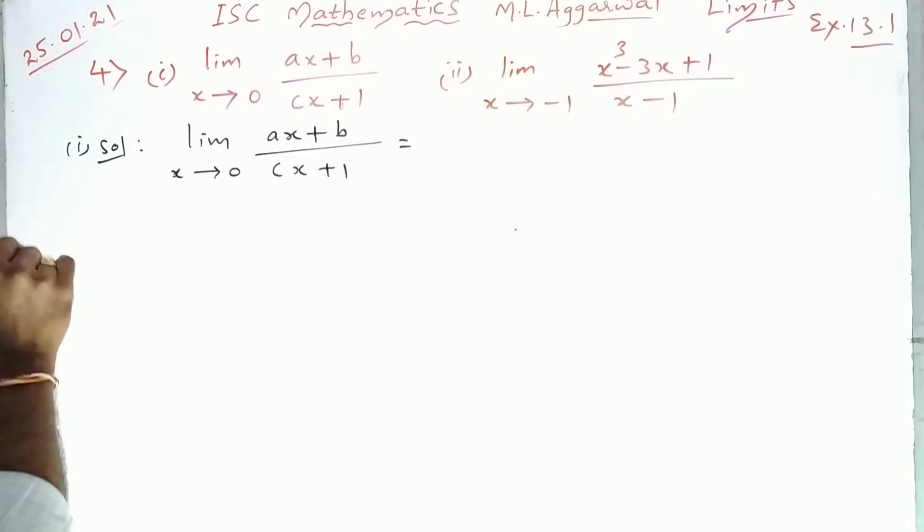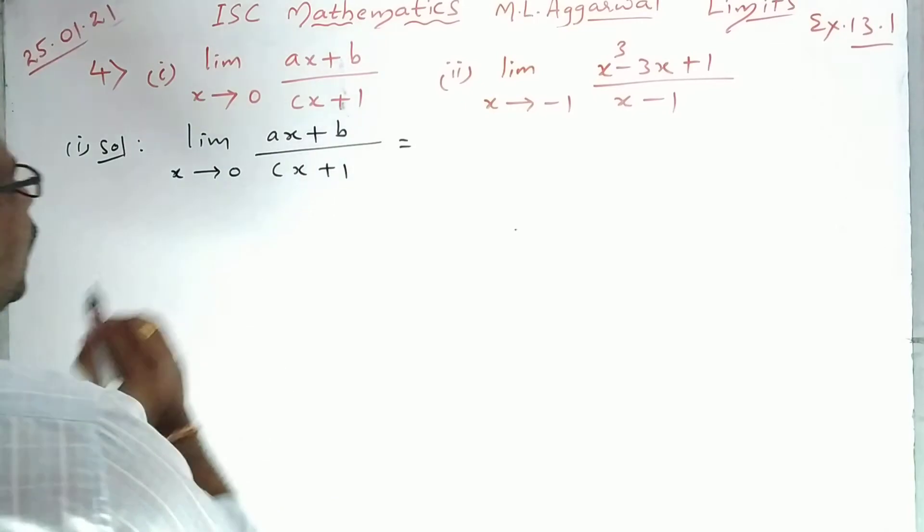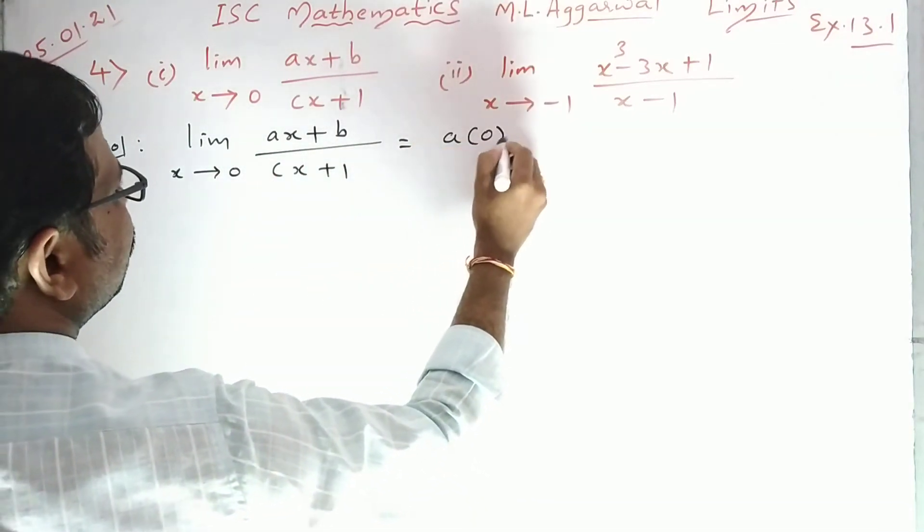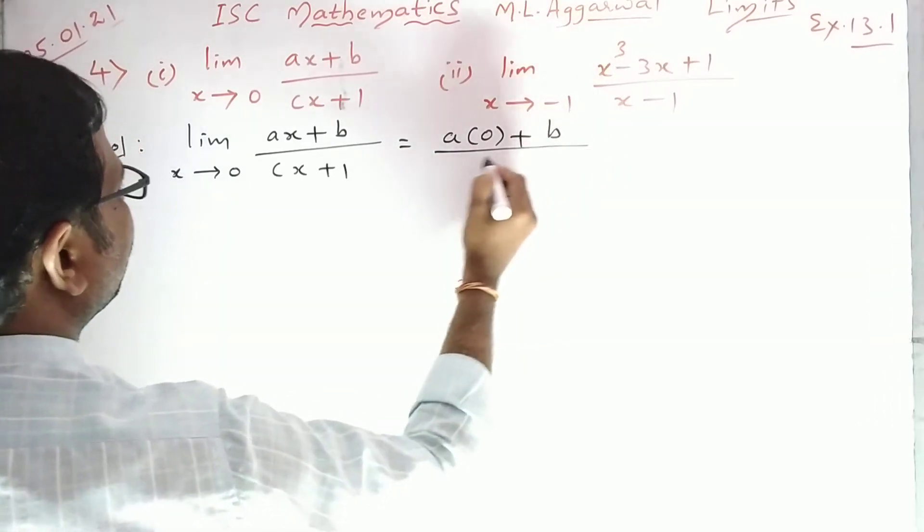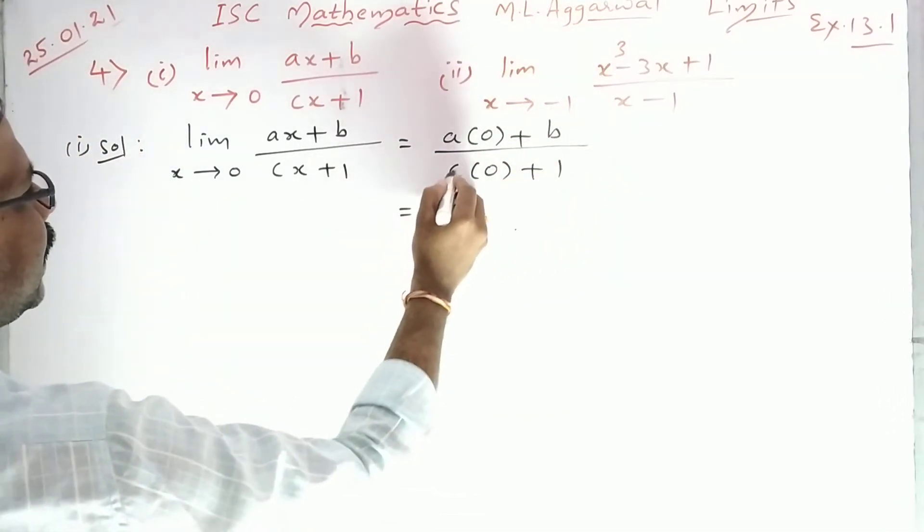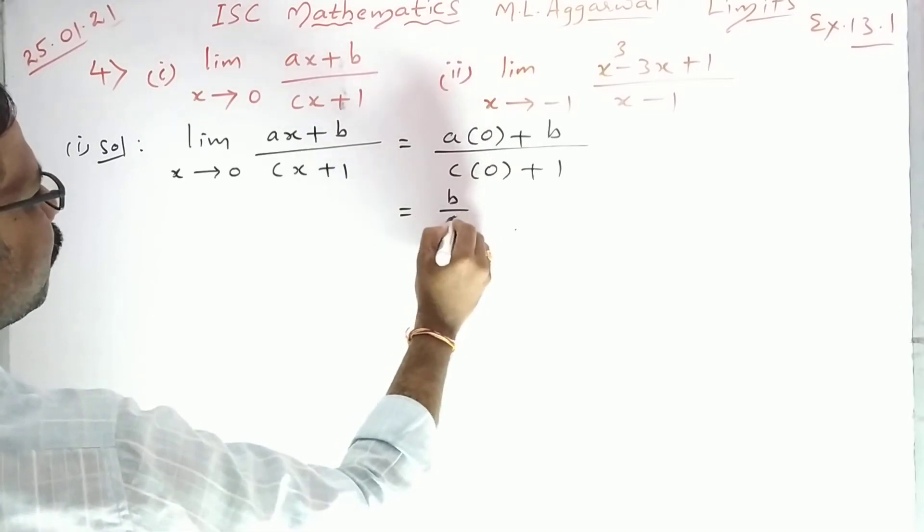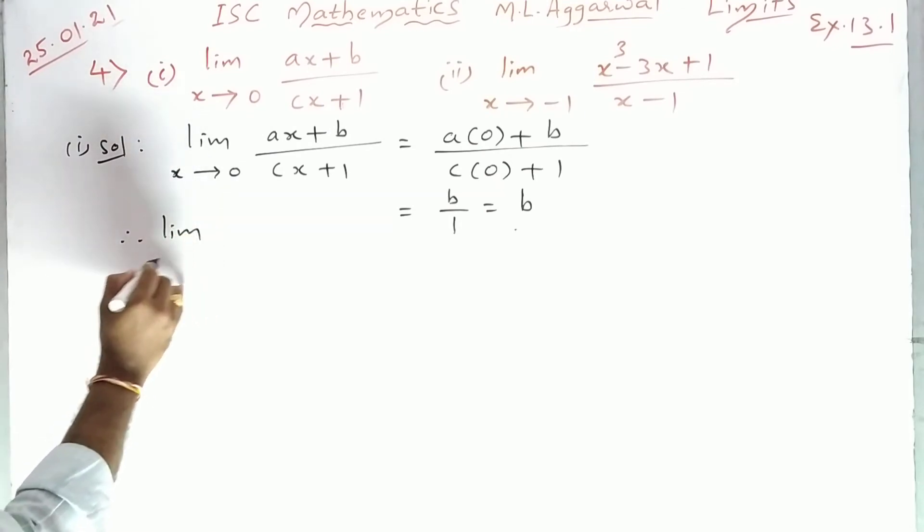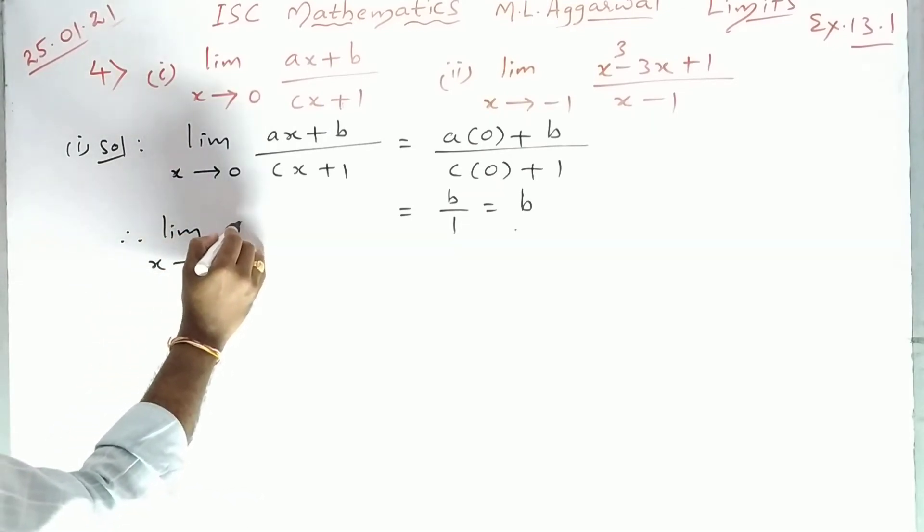Now in the place of x, put 0: a times 0 plus b upon c times 0 plus 1. So what will I get here? b by 1, that means b only. Therefore, limit x tends to 0 of (ax+b)/(cx+1) equals b.